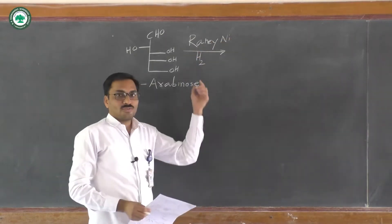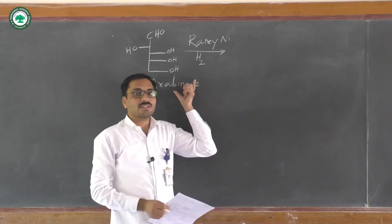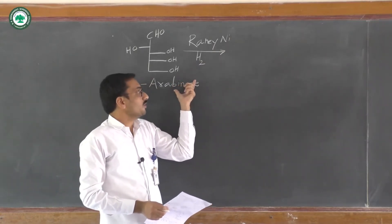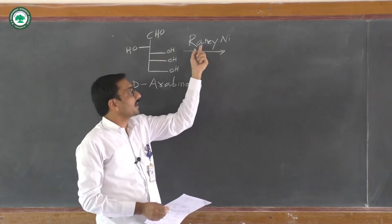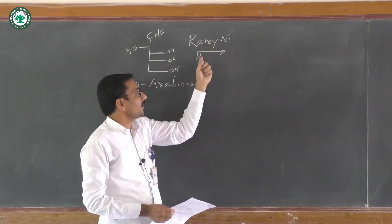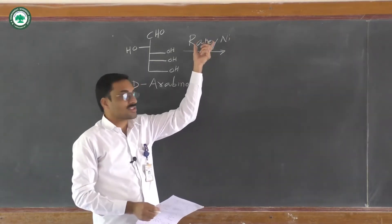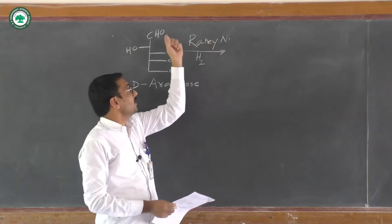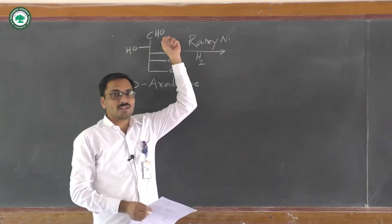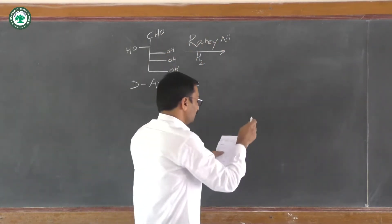In the first step, this D-arabinose molecule undergoes reduction with Raney nickel and hydrogen. In this reduction step, the aldehyde group undergoes reduction into the corresponding OH group.